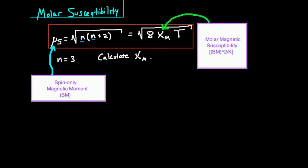In the last video, we did an introduction to molar susceptibility, and we talked about different kinds of compounds. Some are paramagnetic and some are diamagnetic. We're not really concerned about diamagnetic — we're concerned about paramagnetic metals. When we say paramagnetic, what we mean is that they have unpaired electrons. And it turns out that unpaired electrons, when a molecule has them, that molecule or ion tends to weigh more in a magnetic field.